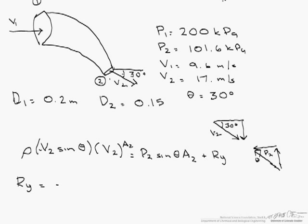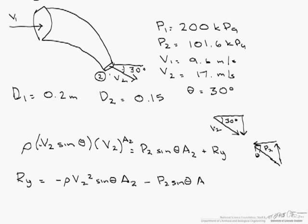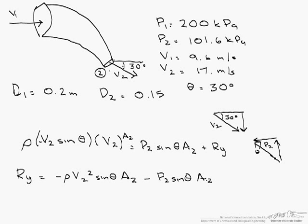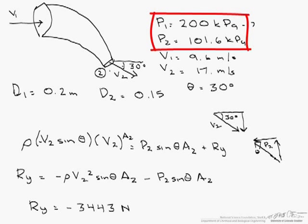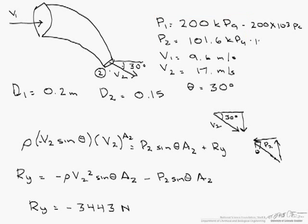So R_y is just minus rho V2 squared sin(theta) times A2, minus P2 sin(theta) times A2. When we put in our density and the numbers we've already calculated, we find that R_y equals minus 3,443 Newtons. I want to remind you that you need to put these pressures in Pascals, so you multiply them by 10 to the third.